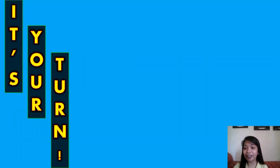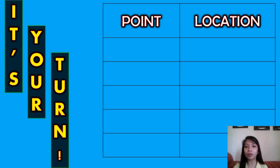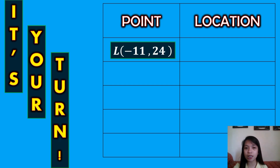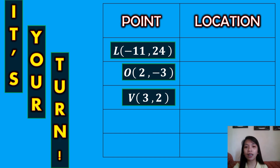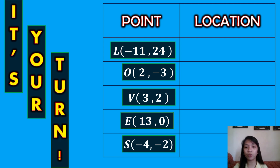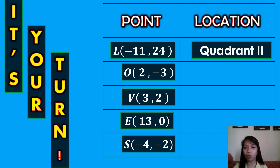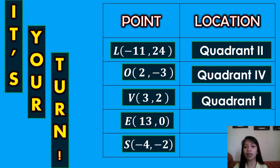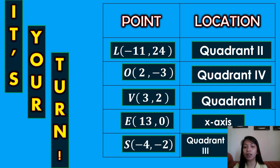So it's your turn! For your activity, you are going to determine the location of the given points: (-11, 24), (2, -3), (3, 2), (13, 0), and (-4, -2). I will give you 2 minutes to answer. Let us now answer. Point L is located in Quadrant 2. Point O is located in Quadrant 4. Point B is located in Quadrant 1. Point E is located on the x-axis. Point S is located in Quadrant 3.